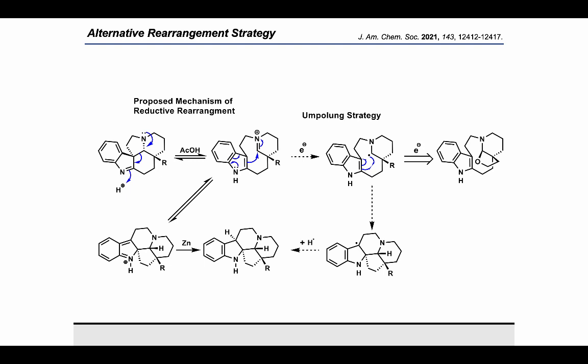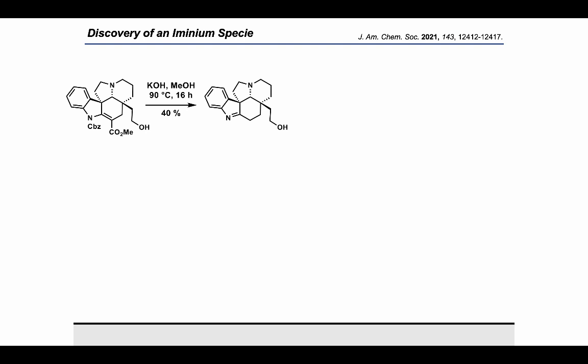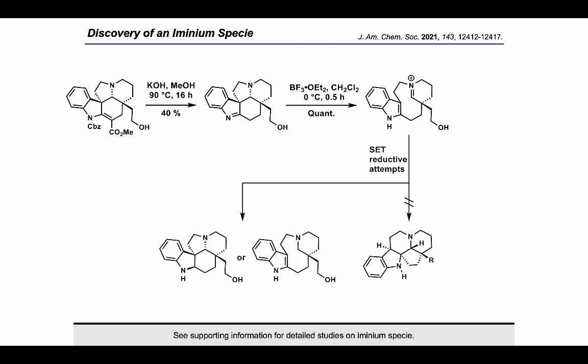Towards the synthesis of the anol acetal, we subjected the primary alcohol to potassium hydroxide in methanol at 90°C for 16 hours, which gave a modest 40% yield for the desired indolenium. Interestingly, attempts to generate the desired anol acetal by Grob-type fragmentation using BF₃ gave us a trisubstituted iminium species where the pendant primary alcohol does not cyclize to form the anol acetal. This iminium was surprisingly stable and we were able to characterize it by NMR studies.